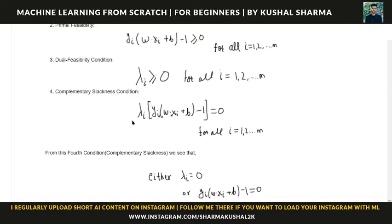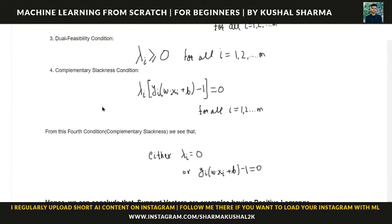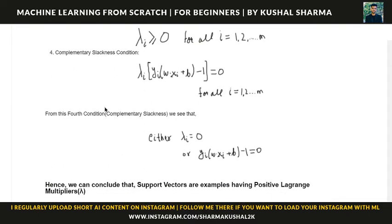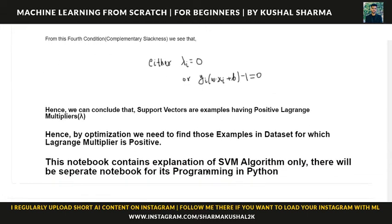The complementary slackness condition is also satisfied here. If you multiply this term with lambda, it gets satisfied because lambda is greater than zero. Either lambda_i should be zero or the constraint term should be zero — both cases are satisfied. If you equate it to zero, it ultimately equals one, and those are the two hyperplanes of the support vector machine.